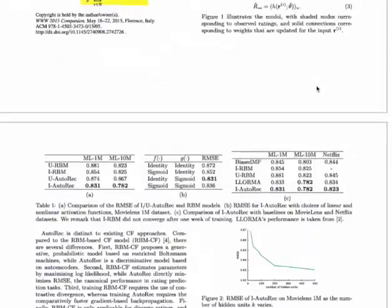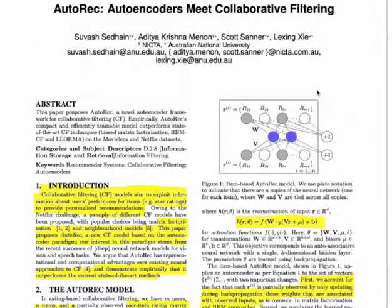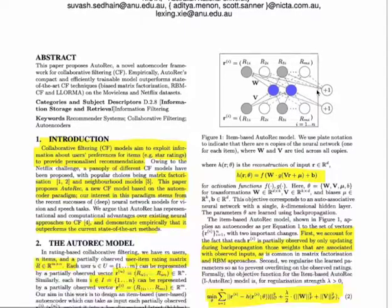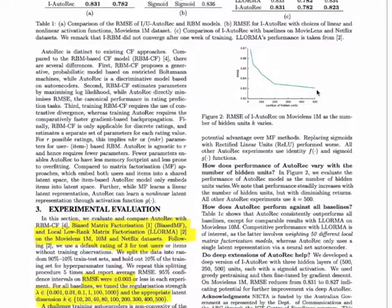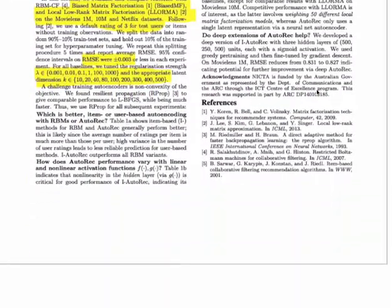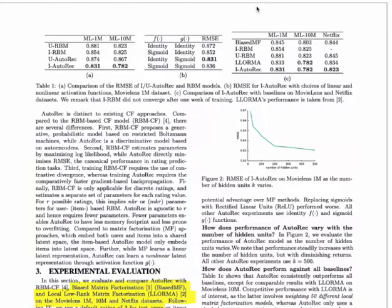So this is the paper about using autoencoders to do collaborative filtering or designing recommendation systems. If you like these kinds of videos, please subscribe to my channel and comment in case you like this video and keep watching for more upcoming videos. Thanks a lot.